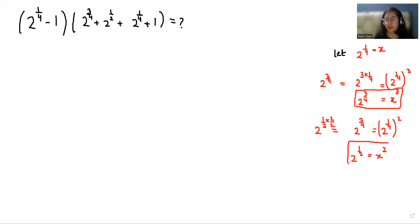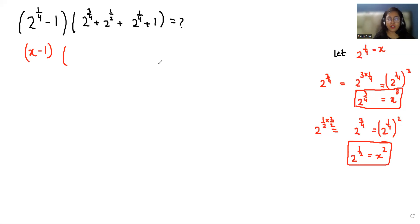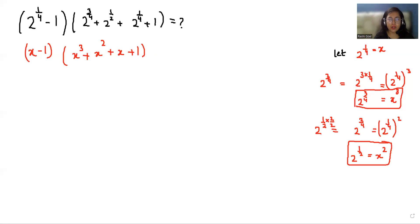Now I'm going to replace the values. So first, 2^(1/4) as x minus 1, then 2^(3/4) as x cubed, plus 2^(1/2) as x squared, plus 2^(1/4) as x, plus 1 equals 2. We have to find the value of (x - 1).